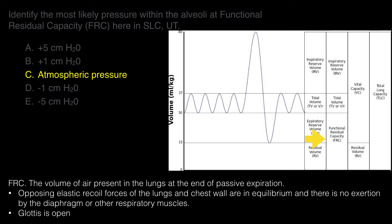There is no exertion by the diaphragm or other respiratory muscles. Understanding functional residual capacity is an important concept. Maybe another way to understand it is just to breathe normally and then stop yourself — at the end of expiration, that's functional residual capacity.